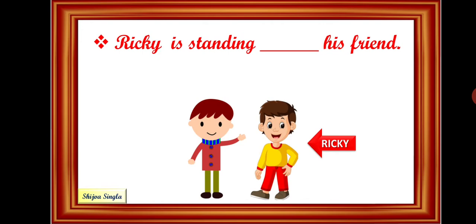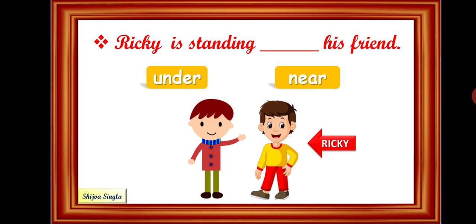Ricky is standing dash his friend. Under or near? As you can see, Ricky is standing at a short distance of his friend. So, the preposition near will be used over here. Ricky is standing near his friend.